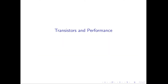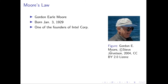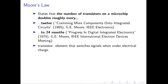In the first few sessions, we'll talk about transistors and how they influence performance. The very first topic is Moore's Law — a prediction made by Gordon Earl Moore in 1965. There's a common misconception about what that prediction actually was. What is commonly referred to as Moore's Law is a doubling in performance every 18 to 24 months. But what Gordon Moore actually stated in his 1965 paper is a doubling of transistors on a microchip — every 12 months initially, which he later corrected to every 24 months in 1975.